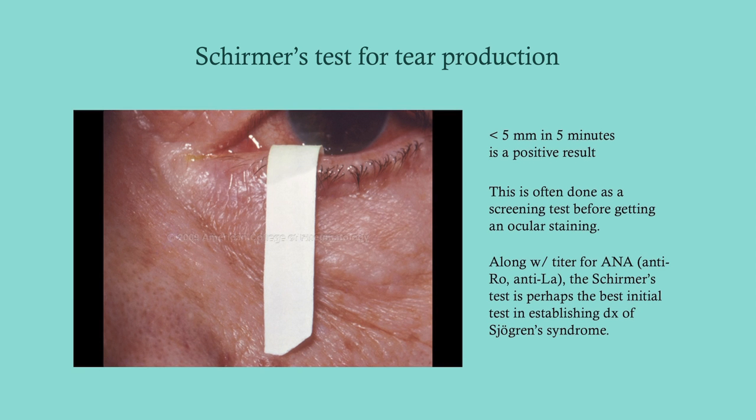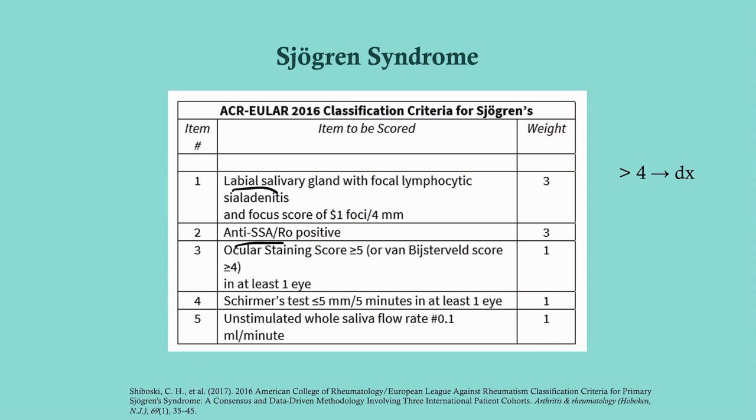The Schirmer test is performed by inserting a small pH strip underneath the lower eyelid and allowing the tears to flow — you don't need to make the patient cry, as having something in the eye is enough stimulus. The strip changes color as tears flow. Less than five millimeters of color change over five minutes is a positive result, indicating reduced tear production.